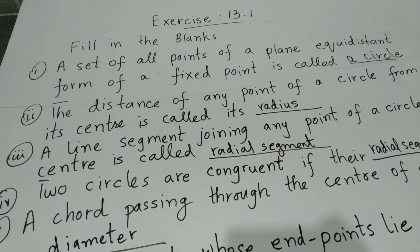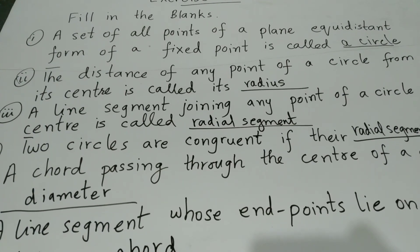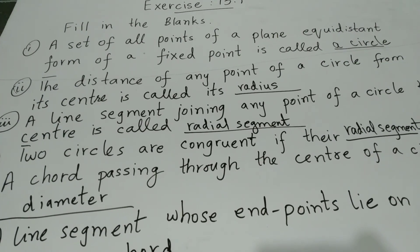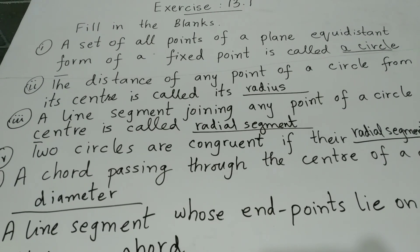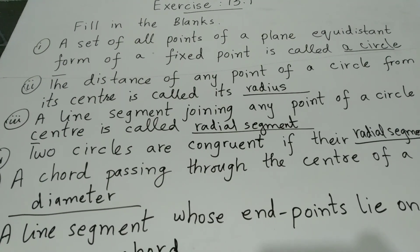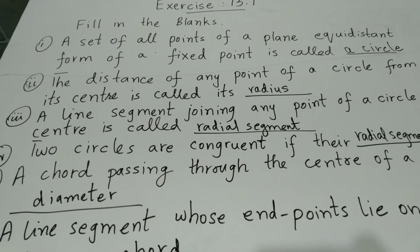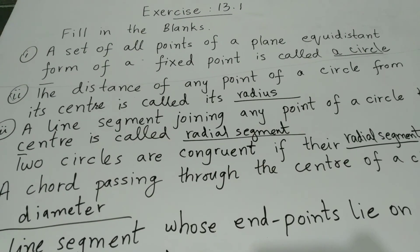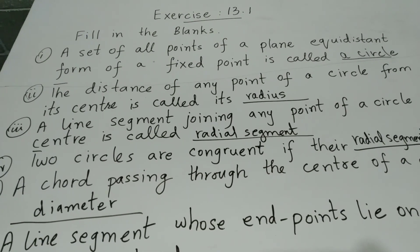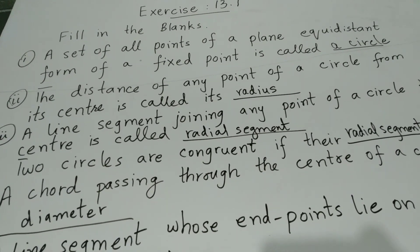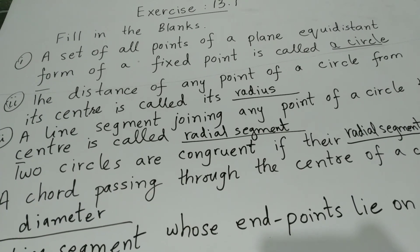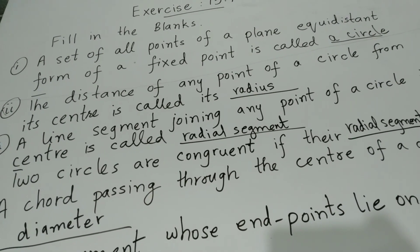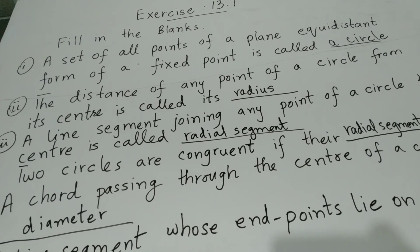The second one: the distance of any point of a circle from its center is called its radius. Circle की boundary पर एक point लें और उसको center point से measure करें, तो वो कहलाता है radius.